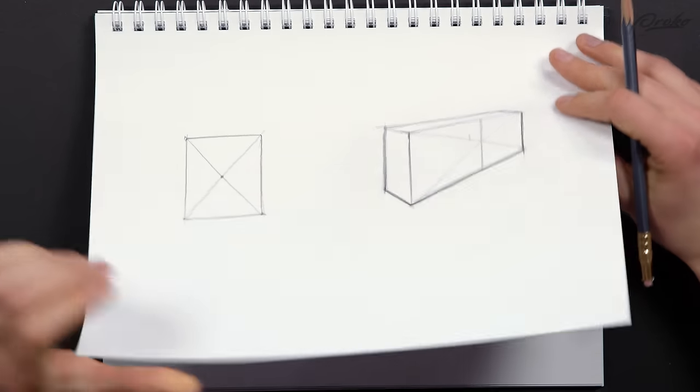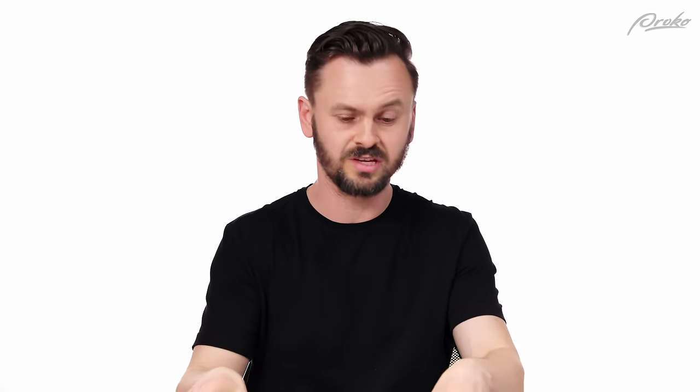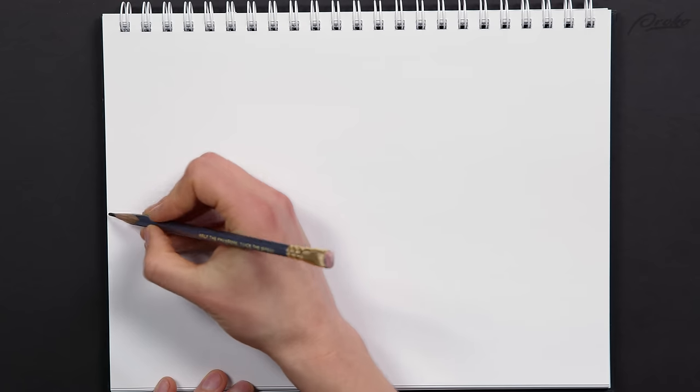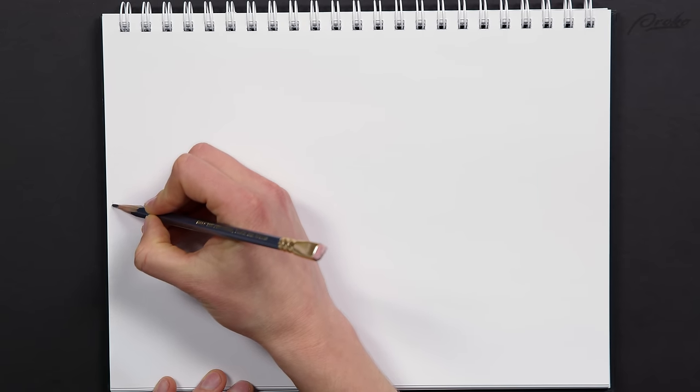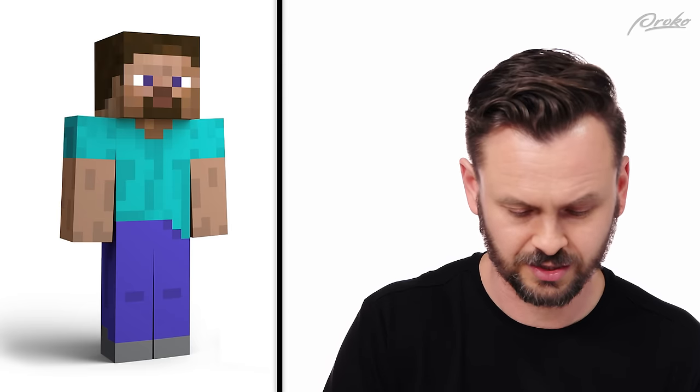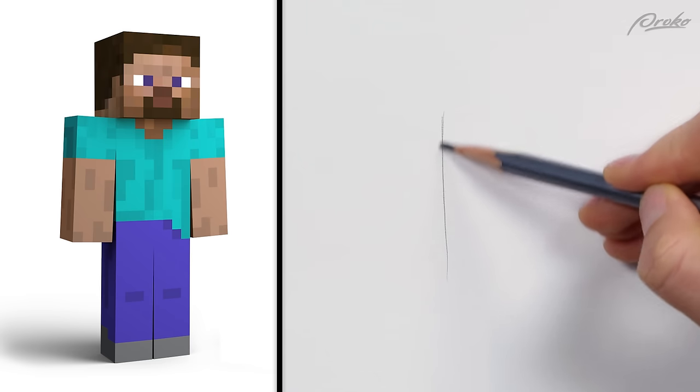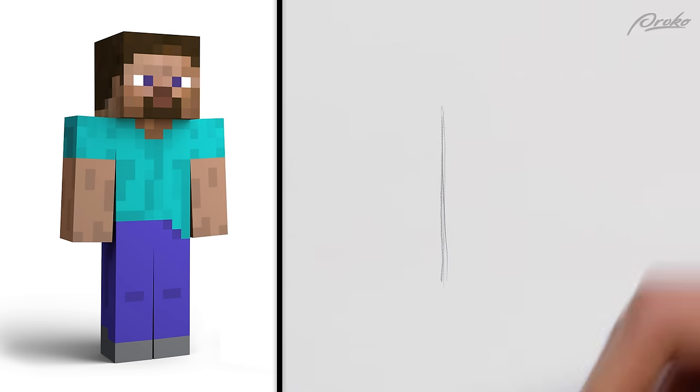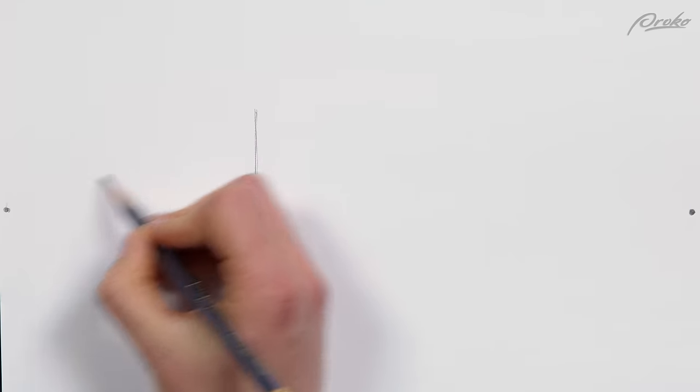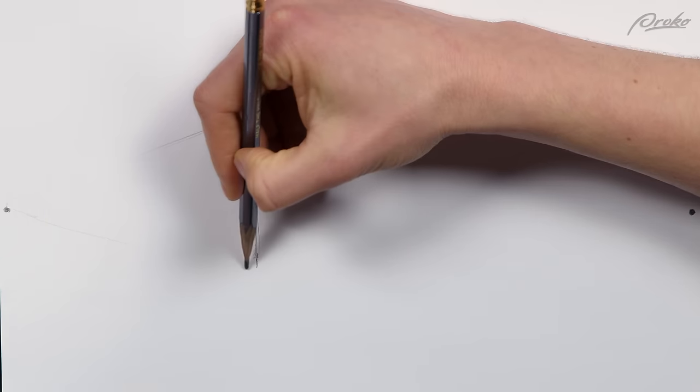Let's start drawing our Minecraft character. For simplicity, I'm gonna put my vanishing points visible on the page just horizontally across from each other. I'm seeing a little bit more of his front than the side, so I'll put that closest edge a little bit more to the left and draw a simple cube representing his torso.